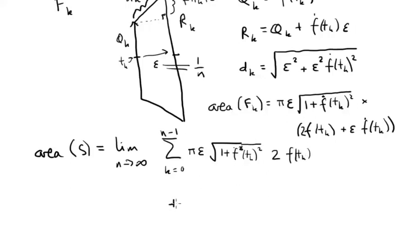And then we're going to multiply out these brackets, so let's write another term plus the limit as n goes to infinity of the sum from k equals 0 to n minus 1 of π times ε times ε, so ε squared, times f dot tₖ. And then with this square root still, 1 plus f dot tₖ squared.